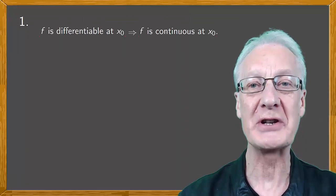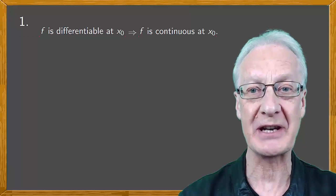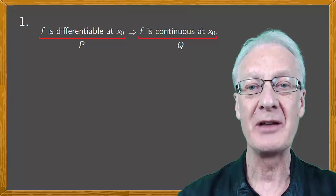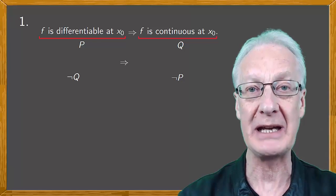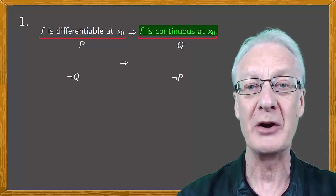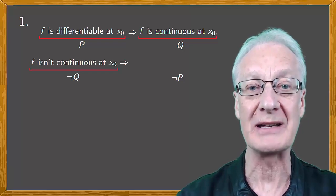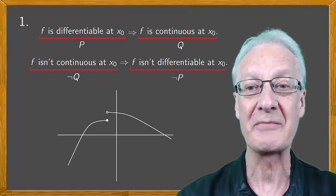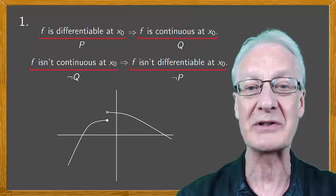It's easy to show that if a function is differentiable at x0 then it's also continuous at x0. If we call this p and this q, the contrapositive is that not q implies not p, so if f isn't continuous at x0, then f isn't differentiable at x0. The first case then for which a function is non-differentiable at a point is when it isn't continuous at that point.